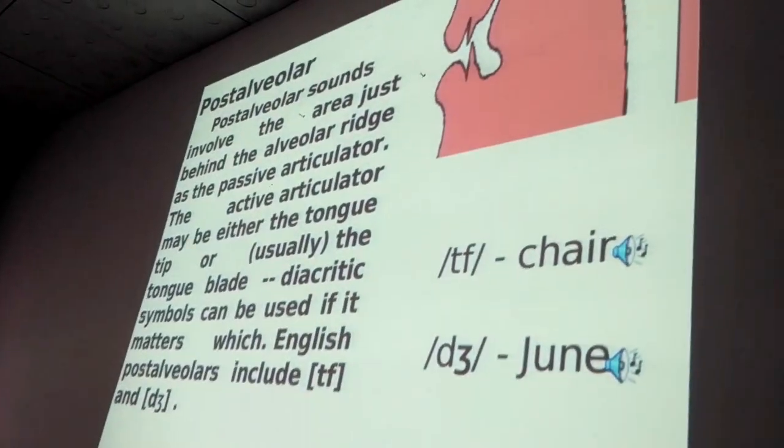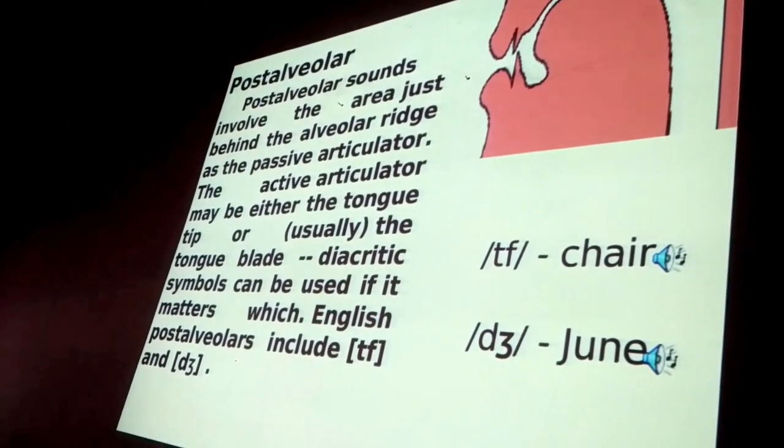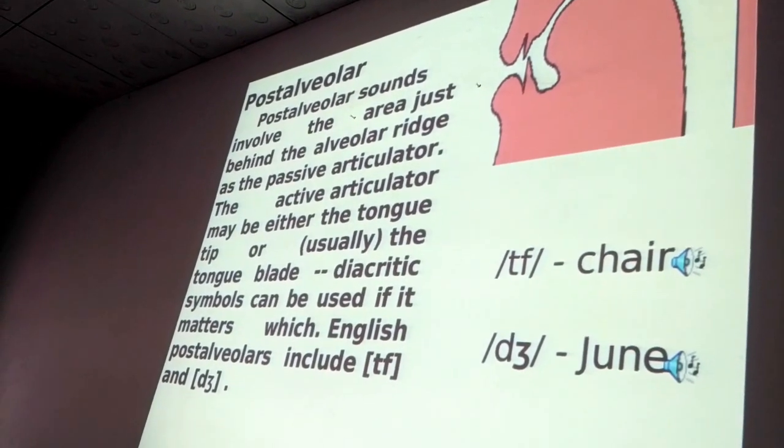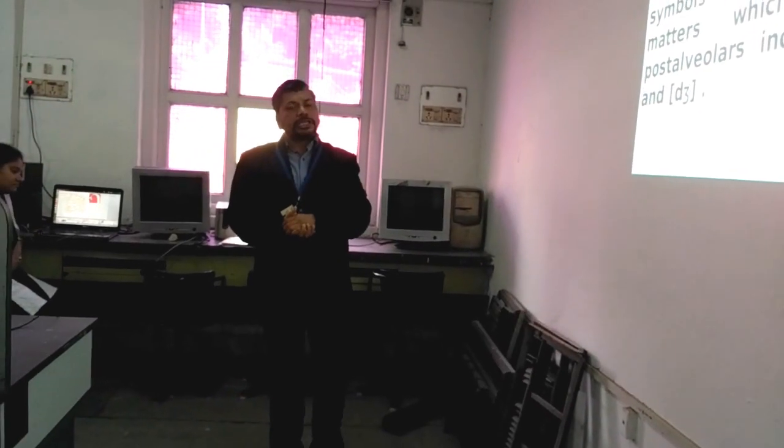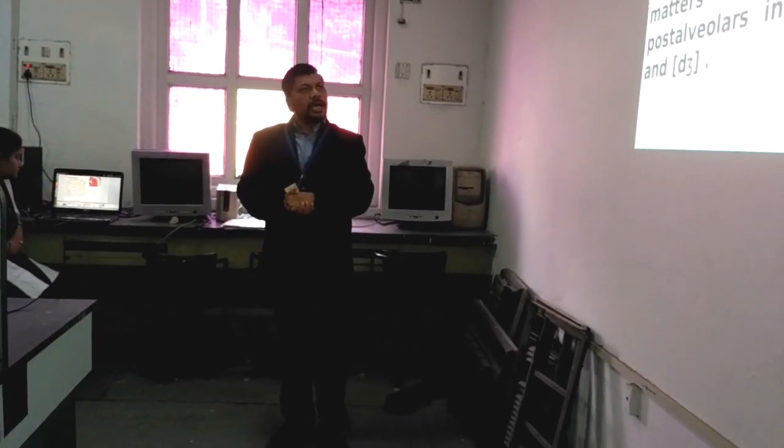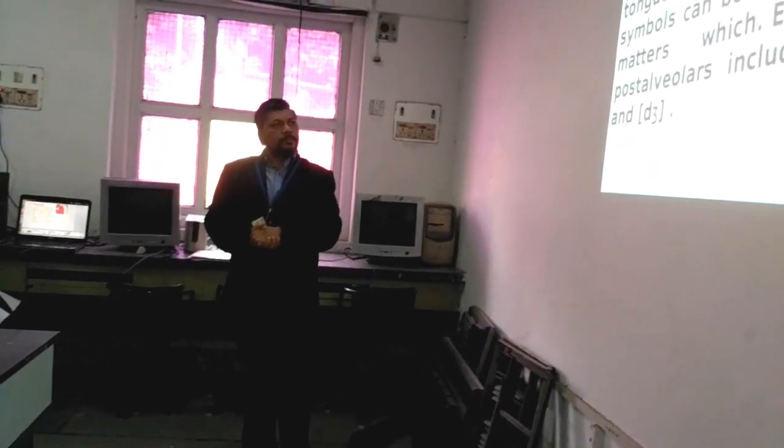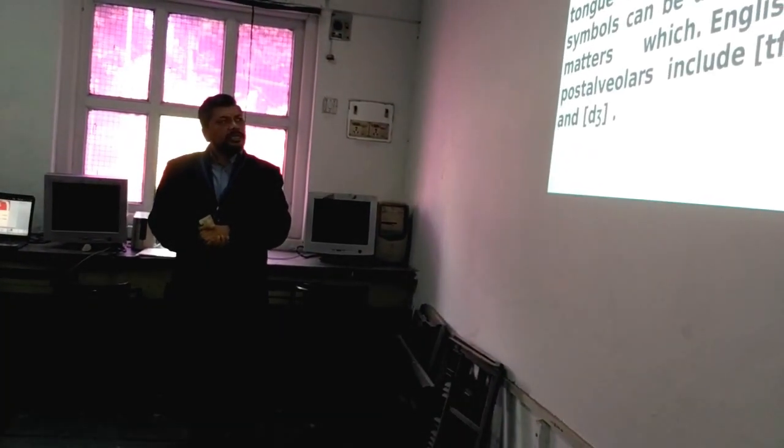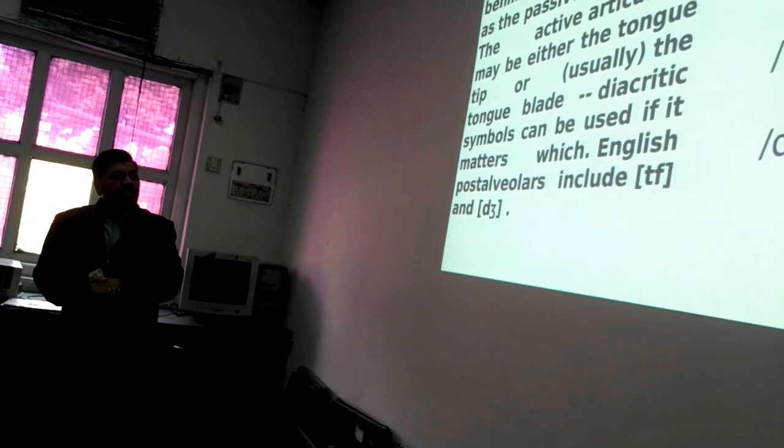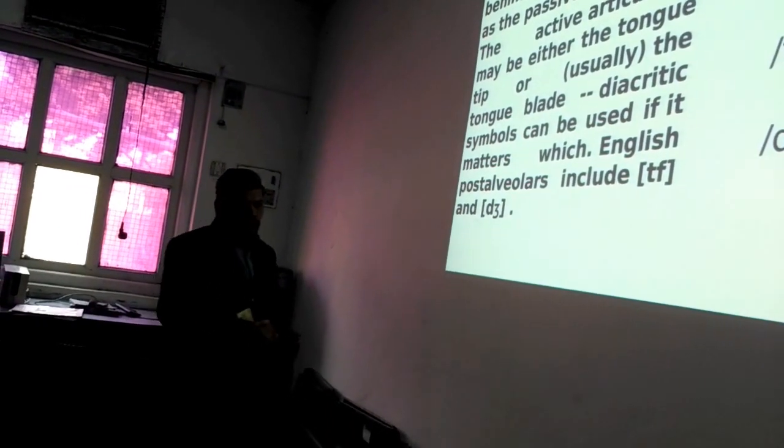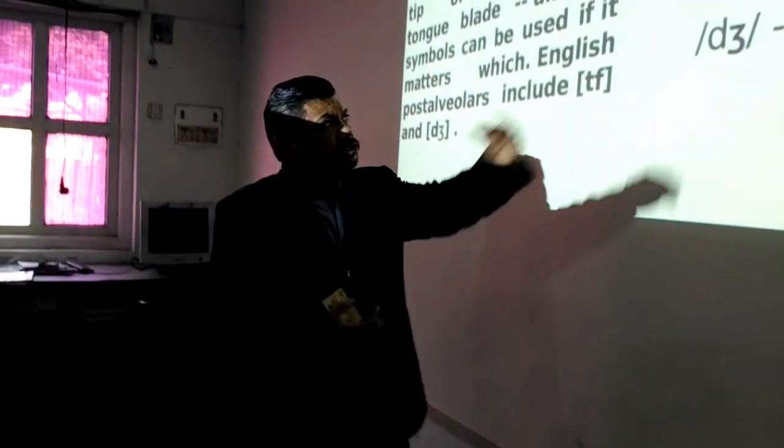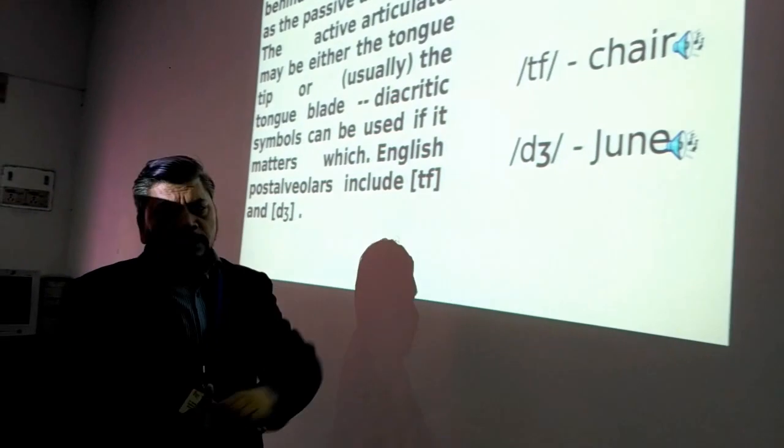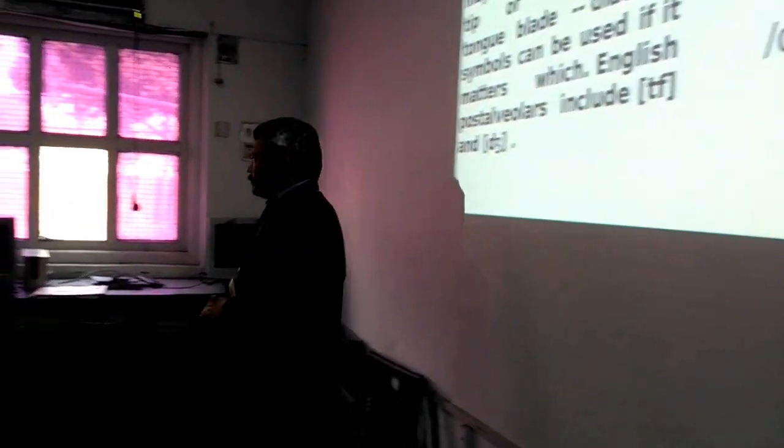Next categorization is postalveolar. Postalveolar sounds involve the area just behind the alveolar ridge as the passive articulator, where it may either be tongue tip or the tongue blade. Diacritic symbols can be used. English postalveolar sounds are CH and J, like CH in chair and J in zoo.